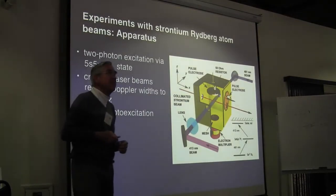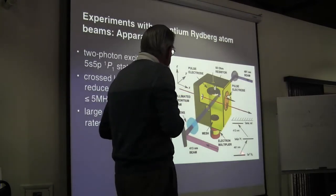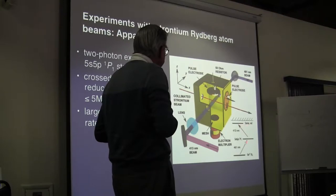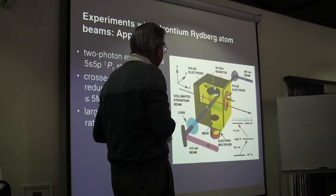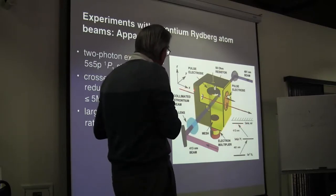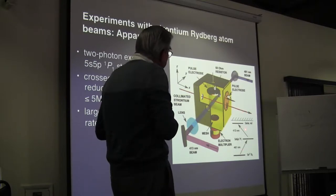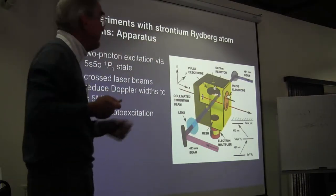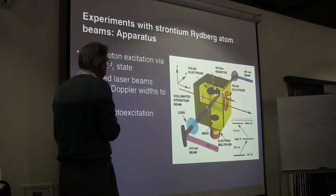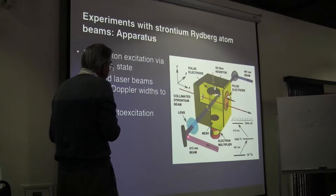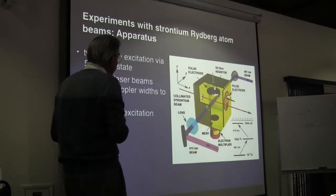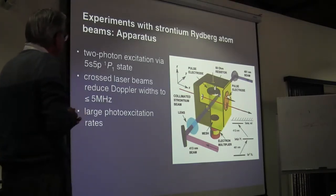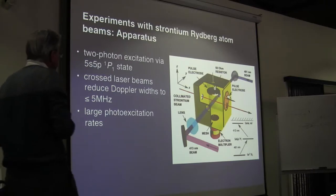The apparatus we use is very similar to that used previously for sodium. The only difference is we use two-photon excitation to NS or ND states. This requires radiation of 461 nanometers to get to the intermediate 5S5P state, and then around 413 nanometers to get up to the Rydberg state. We start with a strongly collimated beam of strontium atoms. We direct two counter-propagating laser beams so that, since they have comparable wavelengths, the Doppler effect essentially cancels to first order. The 413 nanometer beam is focused to a diameter of about 170 microns, and we can reduce the Doppler width to better than 5 megahertz.